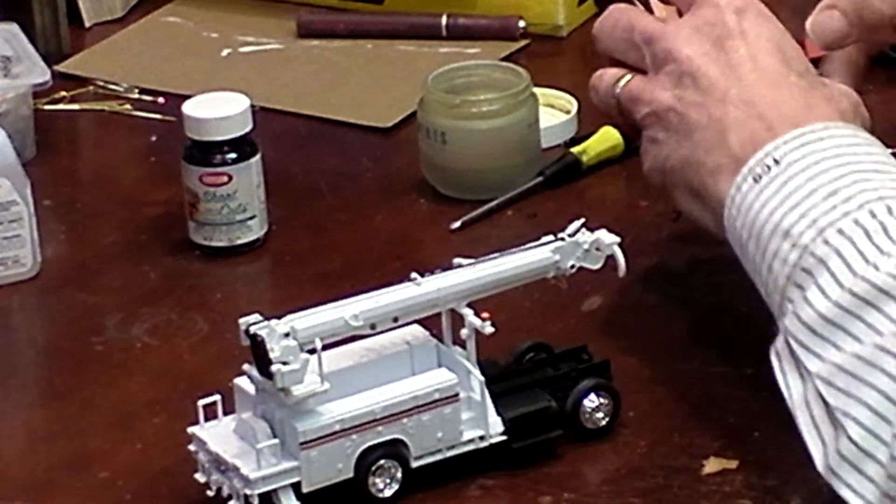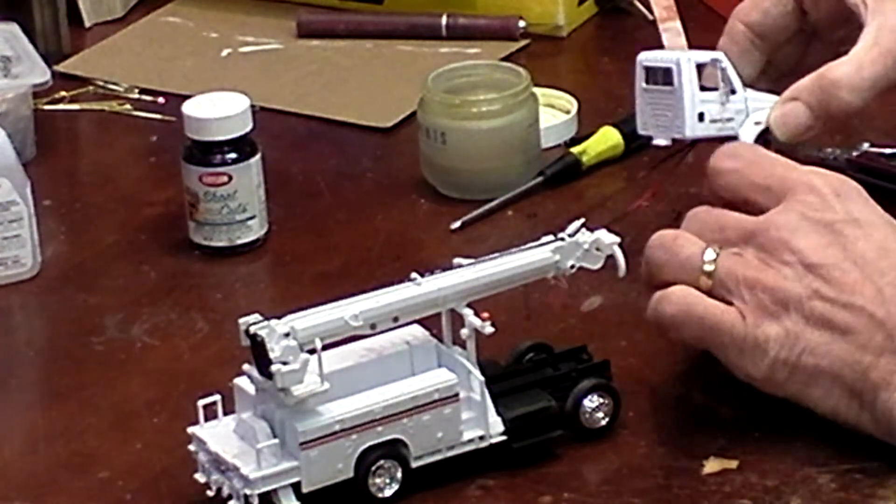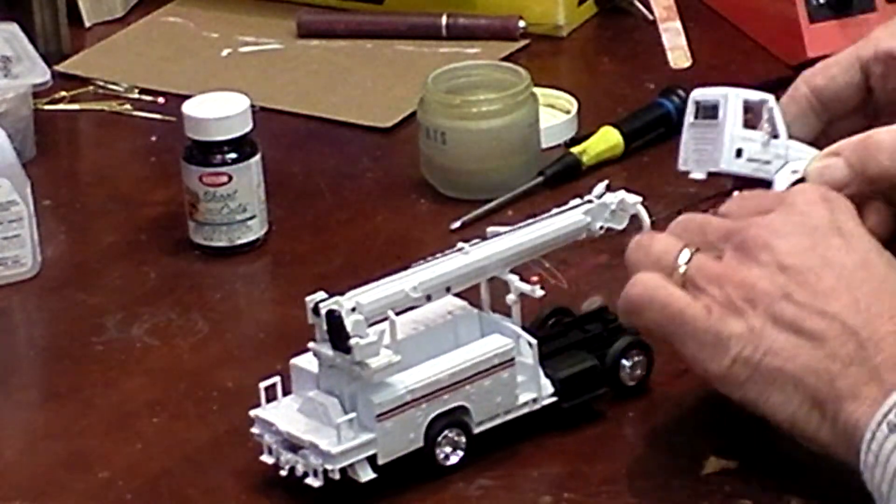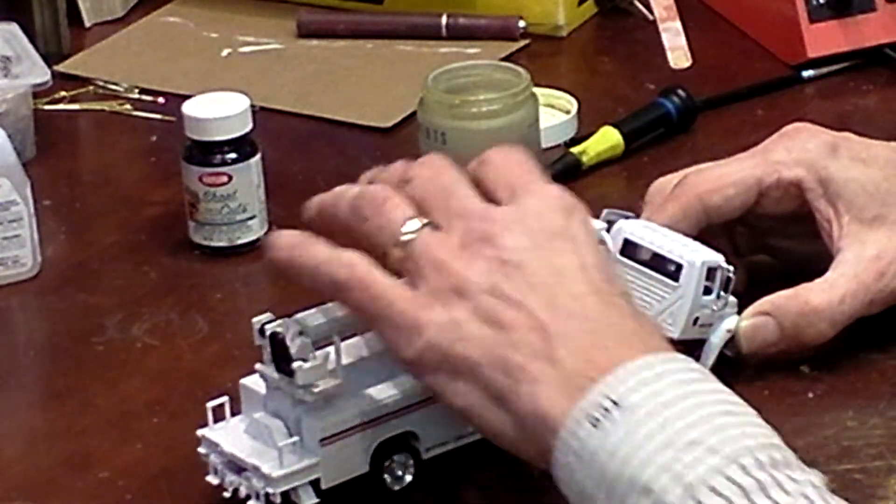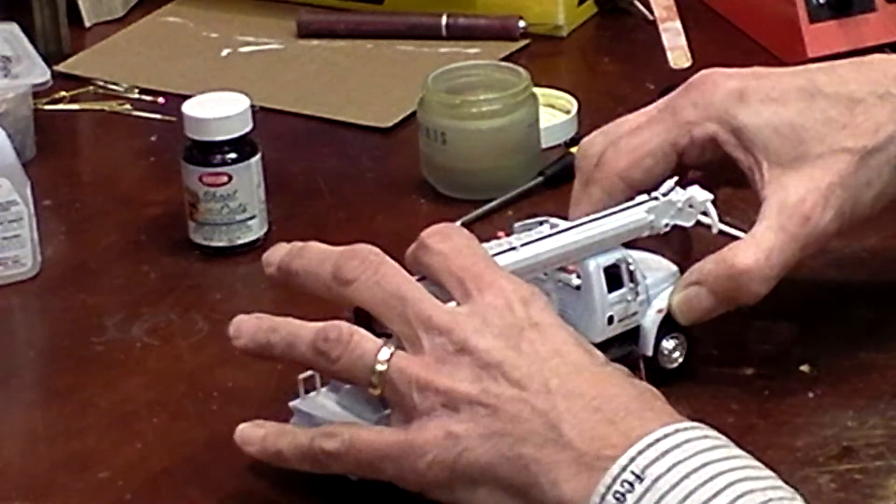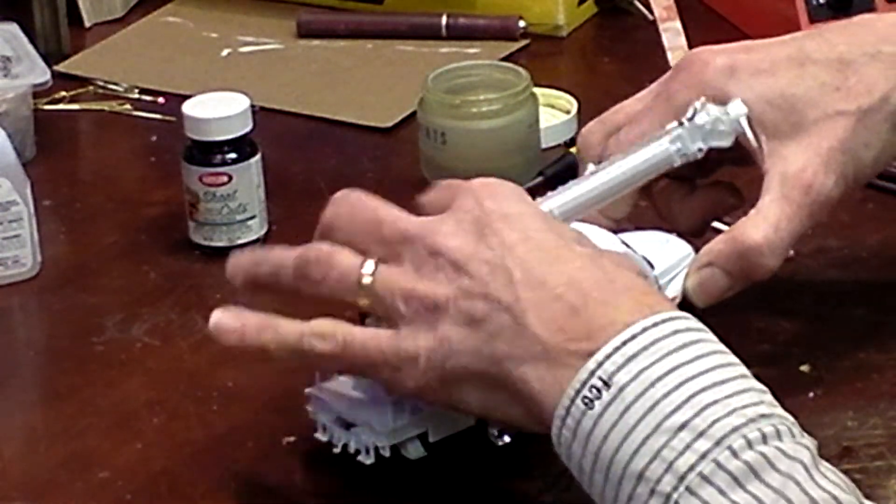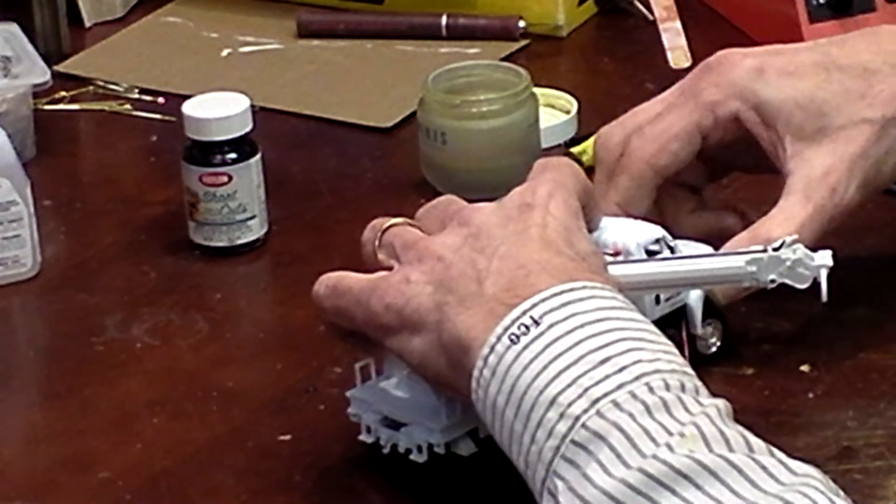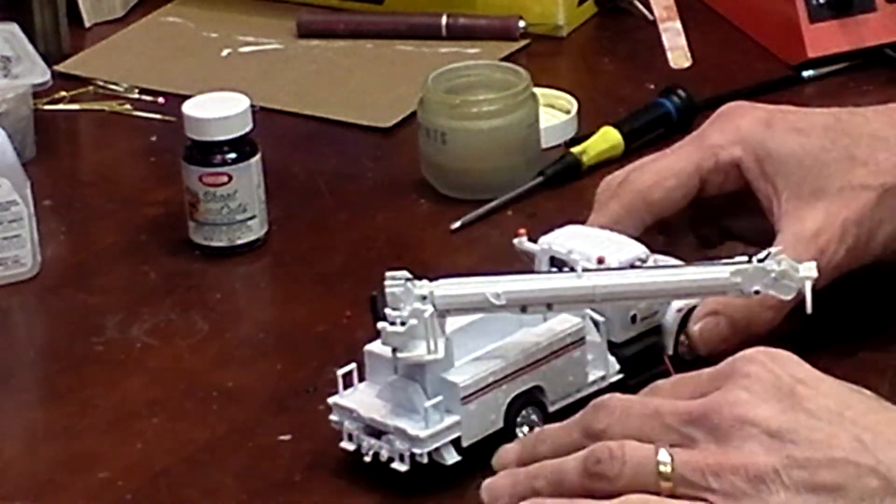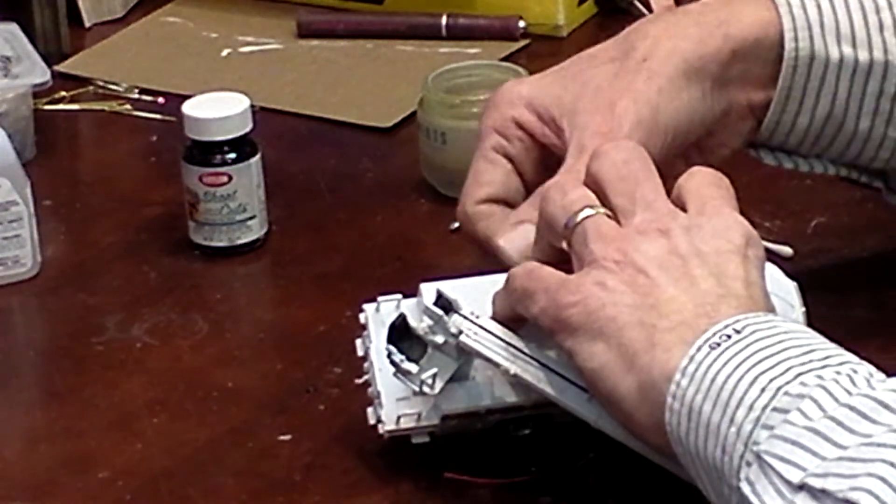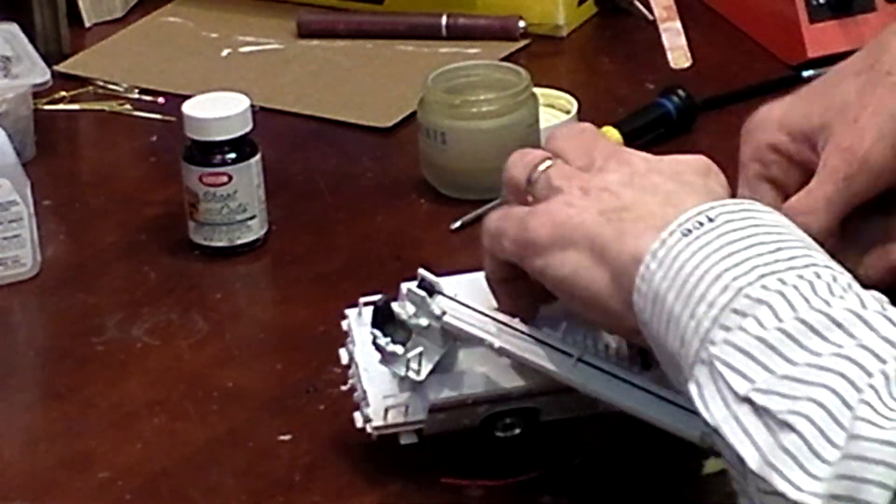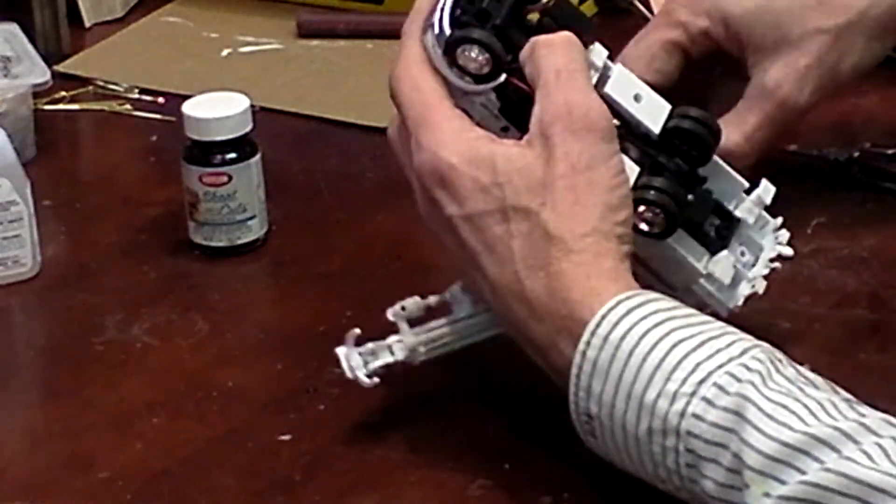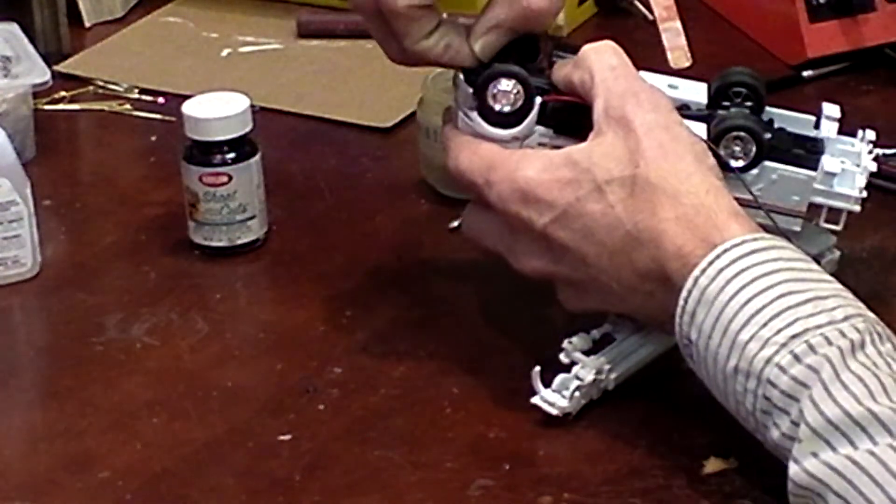Now what we're going to do is put the cab back on. I'm going to run the wires up over top of the wheels like that, drop that cab back in there, make sure I've got my wires run down right, and put the screw back in.